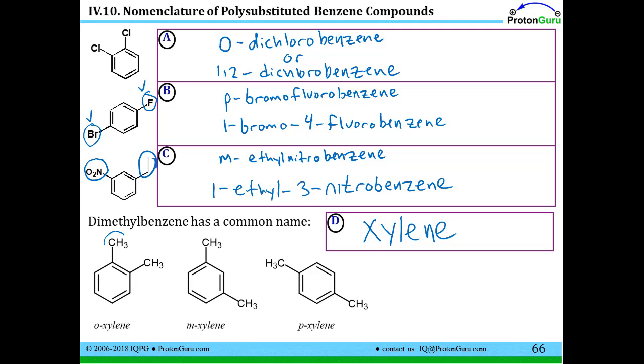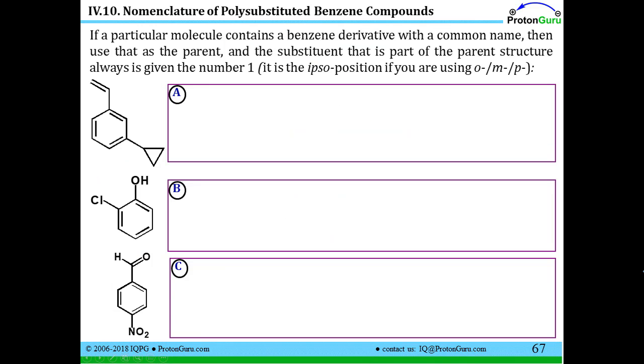And if the methyl groups are ortho to each other, it's of course ortho-xylene. You write out o-xylene, m-xylene, and p-xylene depending on whether the methyl groups are meta or para to one another. Going back to this idea that some of the benzene compounds with specific substituents have very specific names,